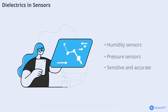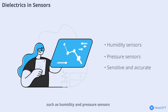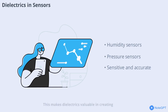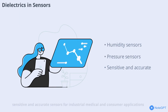Dielectric materials are used in various sensors such as humidity and pressure sensors. Changes in the dielectric properties of a material can be measured and used to detect environmental changes. This makes dielectrics valuable in creating sensitive and accurate sensors for industrial, medical, and consumer applications.